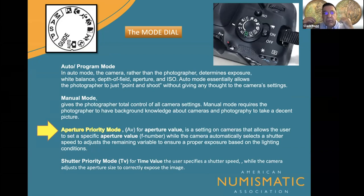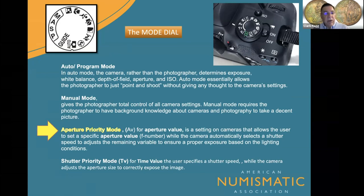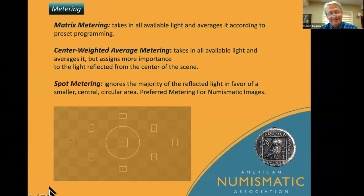If you are shooting in pure manual mode, sometimes just moving your body up to the viewfinder to check focus changes the value of your lighting. So by keeping it on aperture priority, you're setting the f-stop and moving on from there.